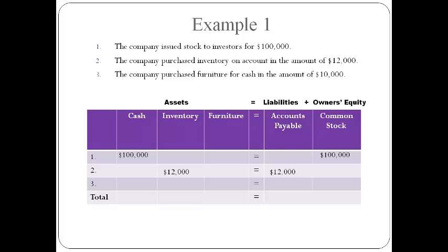The last transaction is an exchange of one asset for another asset. The net of zero on the asset side is equal to no change on the right side. Total each column after recording all transactions. The account names used and the total amounts are reported on the balance sheet.